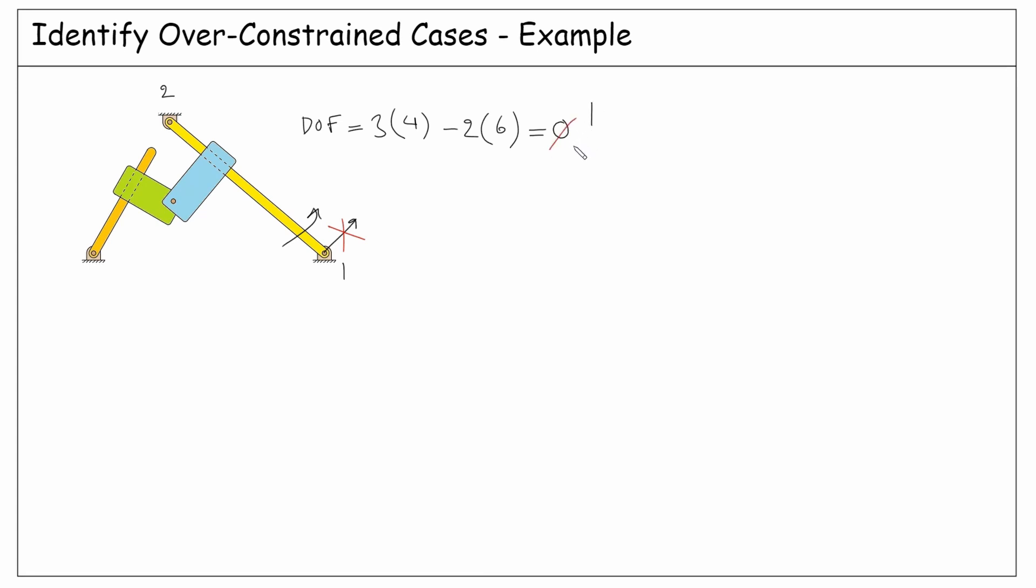Alternately, we could say since this link has two pins, it is rigidly connected to the ground and can be considered as continuation of the ground. This way, the number of bodies is 3 instead of 4 and the number of J1 is 4 instead of 6. And the degrees of freedom becomes 1, which is the correct answer.